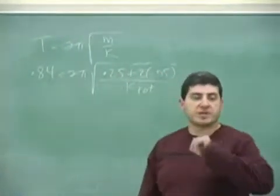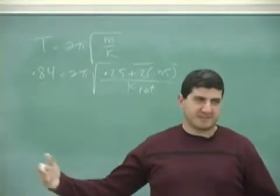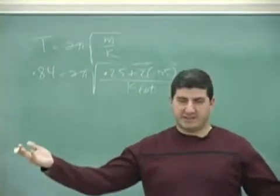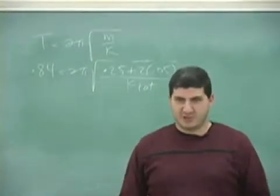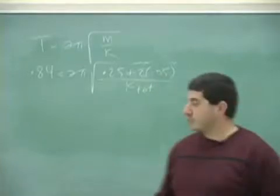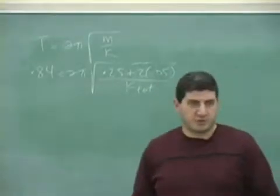So we're expecting k total to be what now? Guess the answer. When they're side by side, 20, right? They should add. So when you do that formula, it should be 20 that you get.